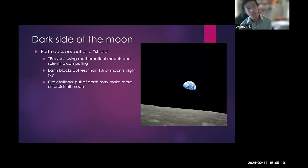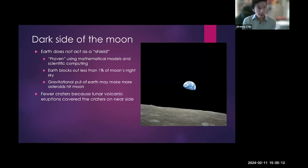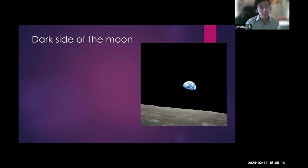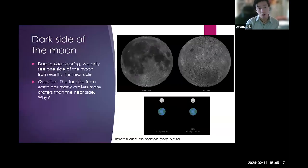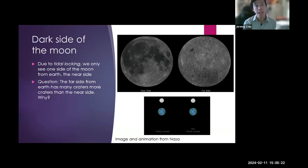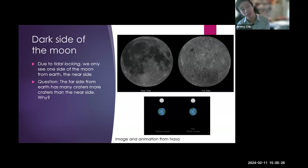Some models even show that gravity will make more asteroids hit the moon because it pulls asteroids that would not otherwise hit the moon into its trajectory. Apparently the reason there are fewer craters on our side is due to lunar volcanic activity — volcanoes spewed out lava and covered the craters.